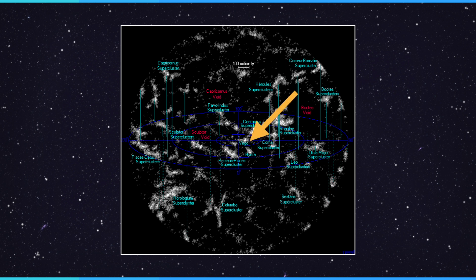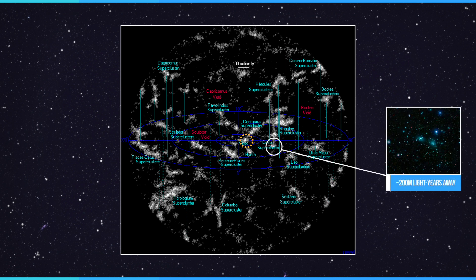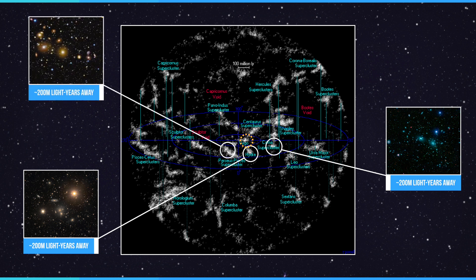The Milky Way and its local group are part of one such galaxy collection named the Virgo supercluster. Other nearby examples include the Coma supercluster, the Hydra-Centaurus cluster, as well as the giant Perseus-Pisces supercluster. All these superclusters are around 200 million light years away.